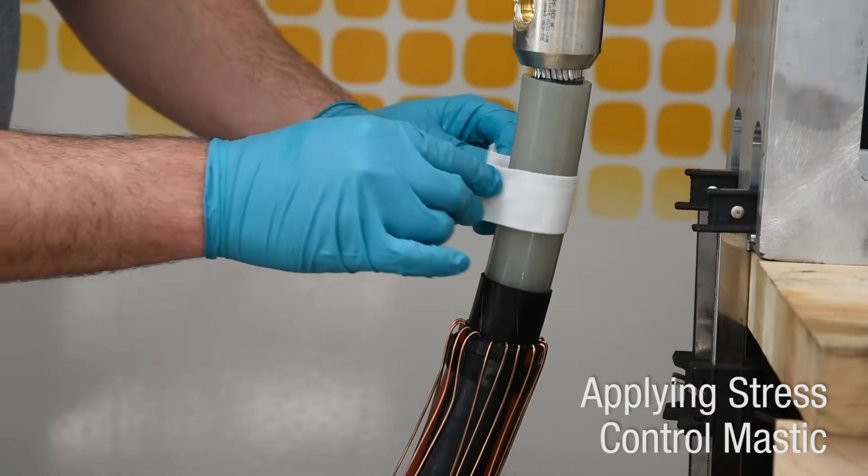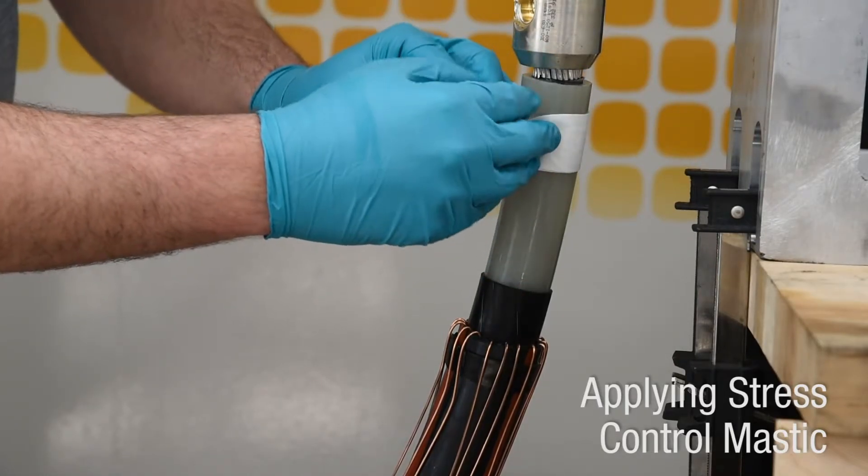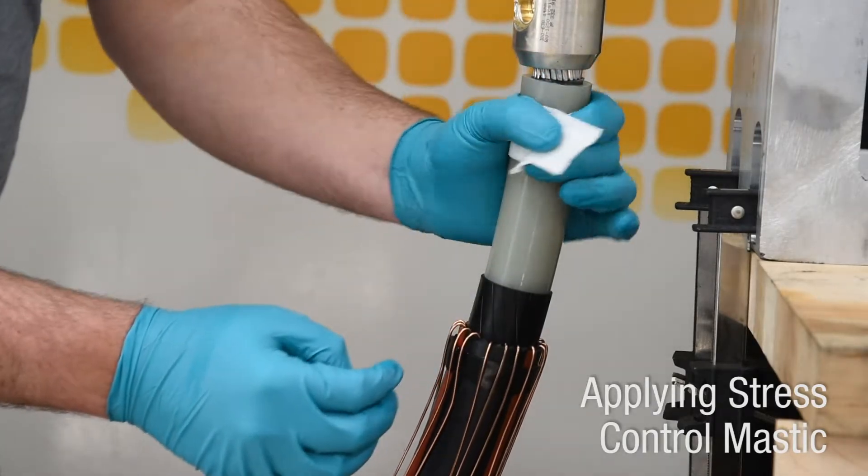Clean the cable insulation with approved wipes or solvent, wiping from the lug end of the insulation towards the semiconductor shield.